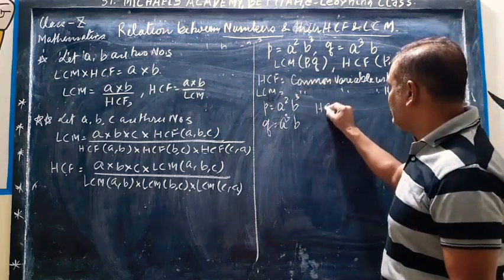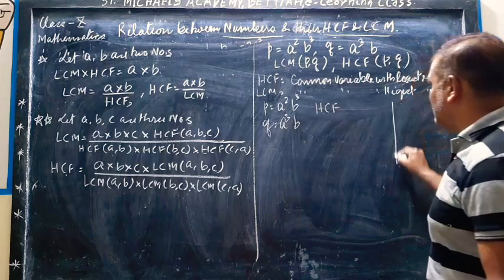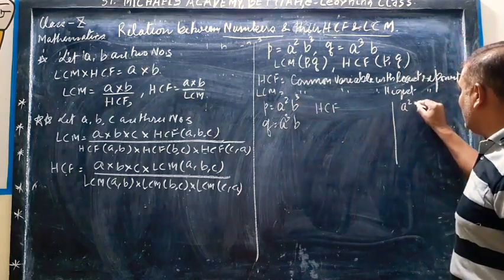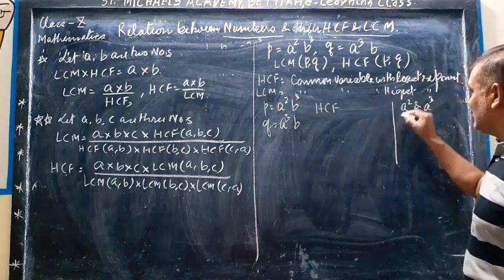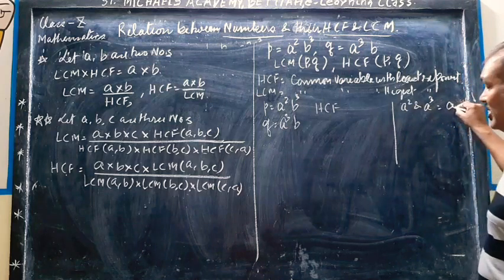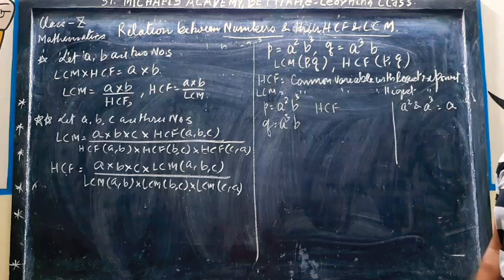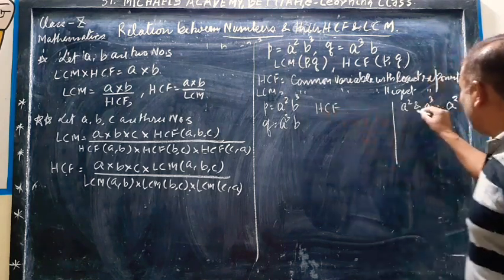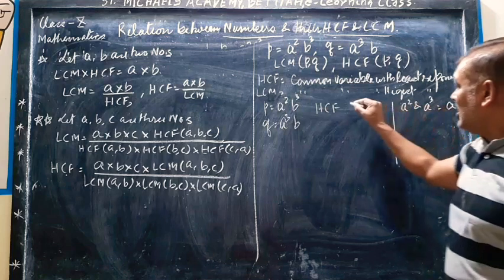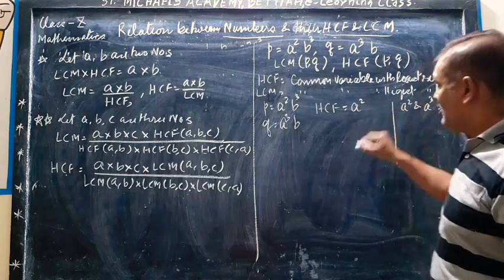First, I am going to find the HCF. Here, A square and A cube. The common variable is A and the least exponent is 2. So HCF has A square.